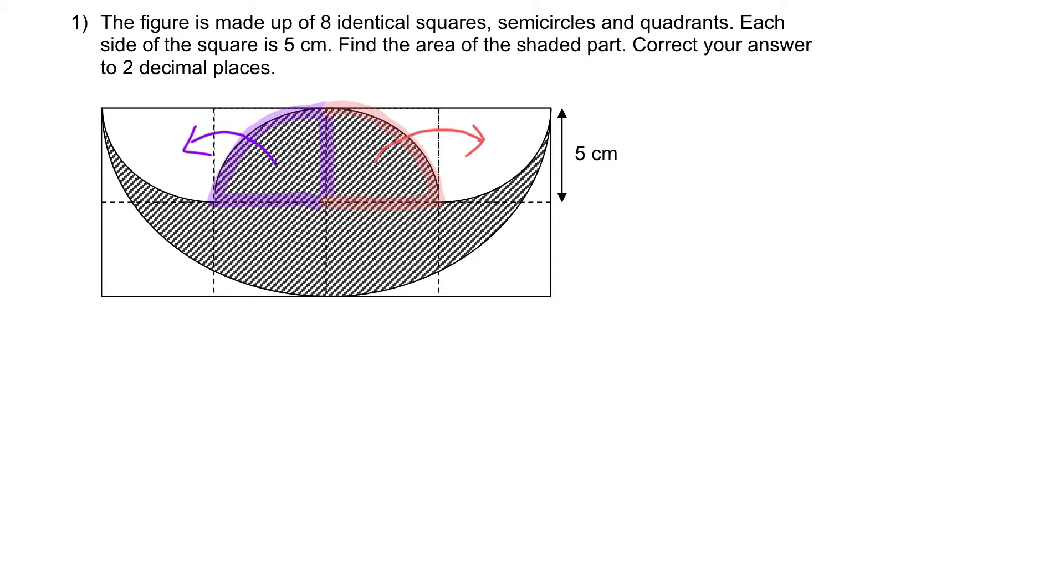So to repeat, after I've shifted this over here and this shaded quadrant over here, what I will get is one big semi-circle with these two squares within it, they are unshaded.